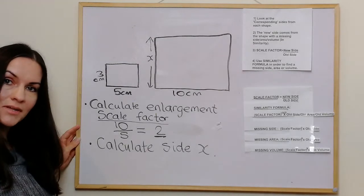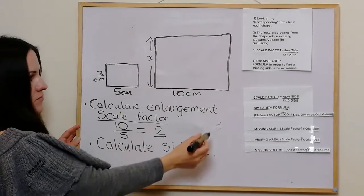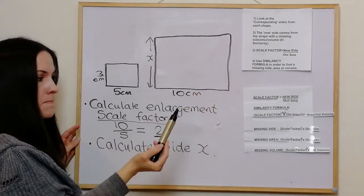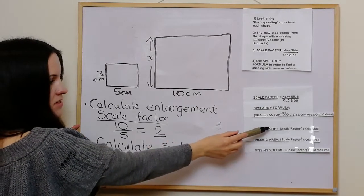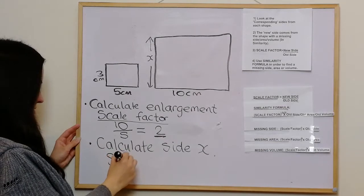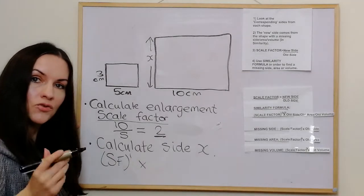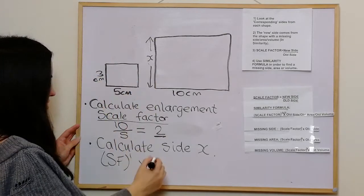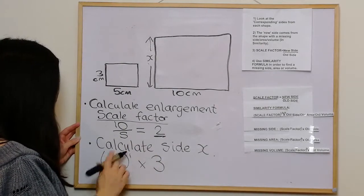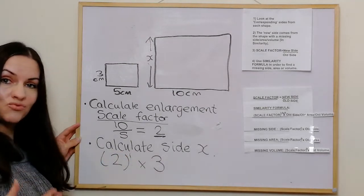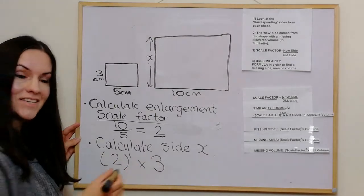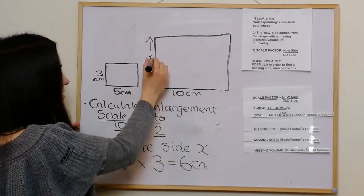The second part moves on to similarity — we're asked to calculate side x. It's step four where we use the similarity formula to find a missing side, which is scale factor to the power of one times the old side. The old side is 3, and our scale factor was 2. So it's 2 to the power of one — which is just 2 — multiplied by 3, which is 6. So this side here would be 6 centimetres. The power of one sets you up well for area and volume questions.